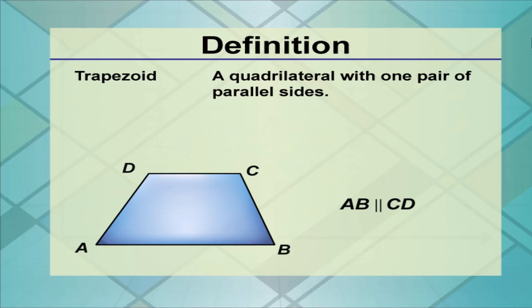Now to add on to that, parallel sides are called the bases, so AB and DC in this example would be the bases. Non-parallel sides are called legs, so these would be the legs, AD and BC.